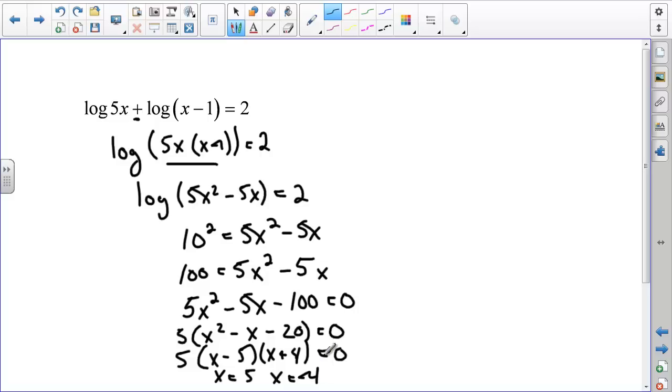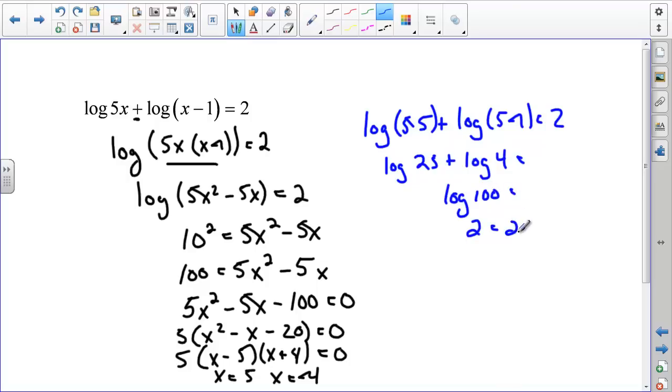That's a lot of work, and we're not quite done yet, because we need to check. When I check, I get the log of 5 times 5 plus log of 5 minus 1, and that should be 2. This is the log of 25 plus the log of 4, all good still. That's the log of 25 times 4, which is 100, which is 2, and 2 equals 2, and that works out.